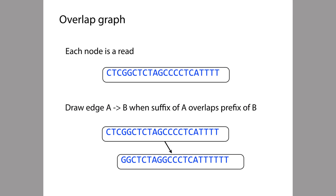We can represent all of the overlap relationships in a dataset of sequencing reads in the following way. We make a directed graph where the nodes correspond to the reads in our dataset. Then, for a pair of reads that have an overlap — where the suffix of one matches a prefix of the other — we draw a directed edge from the read that has the suffix to the read that has the prefix.